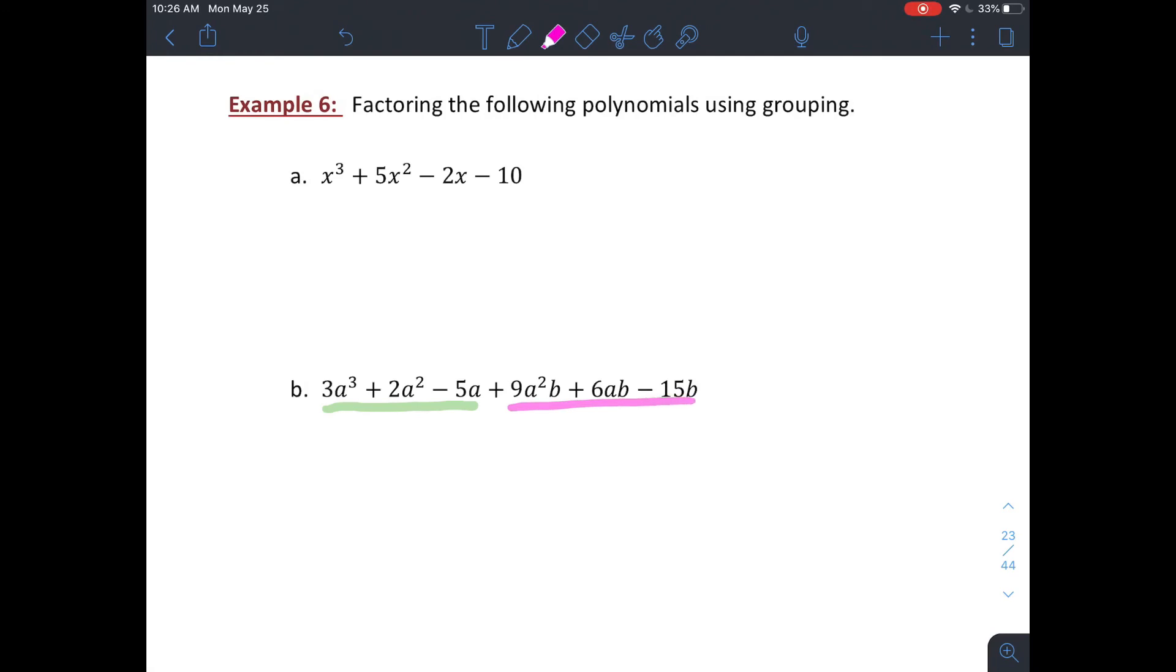So if I do split this into these two groups, I could factor an a out of all the terms that are underlined in green, which will leave me with a 3a squared plus 2a minus 5. And then on my second set that's underlined in pink, I could factor out, let's see, they all share a factor of b. And also 9, 6, and 15 are all divisible by 3. So I'm going to factor out a 3b.